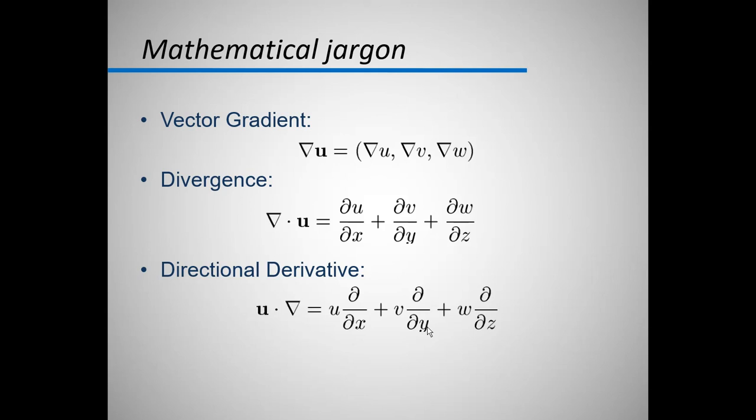What happens is that i dot i becomes equal to one because the angle is zero, cos(0) is equal to one. So the i dot i becomes equal to one, so ∂u/∂x remains. Then if I multiply ∂u/∂x i with ∂v/∂y j, the product will be zero because cos(90) equals zero. And similarly ∂u/∂x i multiplied by ∂w/∂z k will also give zero. And similarly other terms ∂v/∂y and ∂w/∂z are obtained.